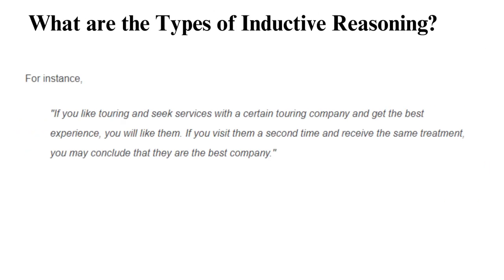The types of inductive reasoning are as follows. First, generalization: it's an approach that makes the final statement based on recurrent patterns or repeated observations. To make this conclusion, you must observe a situation several times and then combine common patterns. For instance, if you seek services with a certain touring company and get the best experience twice, you may conclude they are the best company. However, this may be overly generalized if someone else has a bad experience.